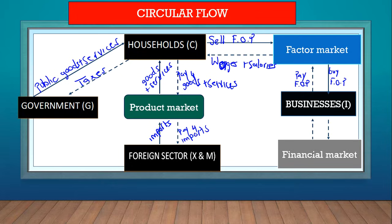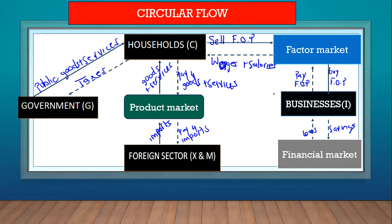Finally, let's look at the interaction between businesses and the financial market. Financial institutions such as banks only deal with money, so there is only a money flow here — no real flow. Businesses will get loans from financial institutions and in return save their money there. The same applies to households: we get loans from financial institutions and save our money with them. These are some of the key examples of interactions in the circular flow diagram. Look out for part two of this video.